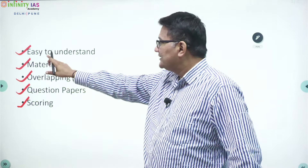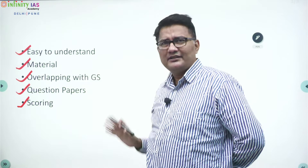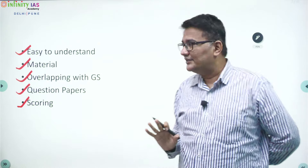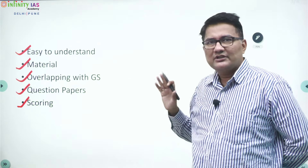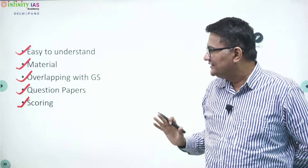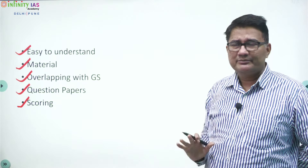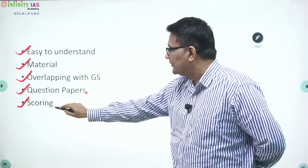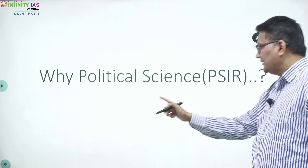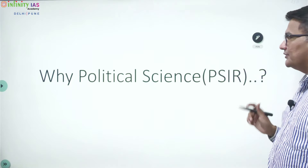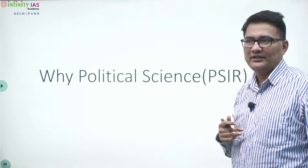These are the reasons why students normally go for political science. To summarize: it is quite easy to understand, enough material is available in the market, the syllabus overlaps mostly with GS, and if you see the previous question papers, the scoring pattern is on the positive side with political science. That is the reason students should go for political science. Thank you all.